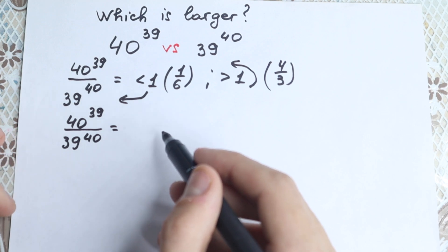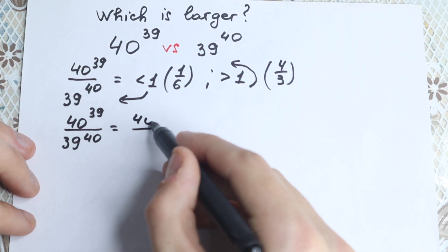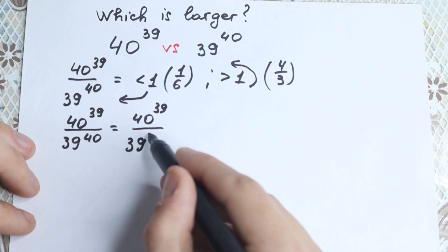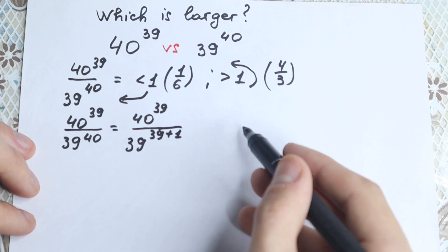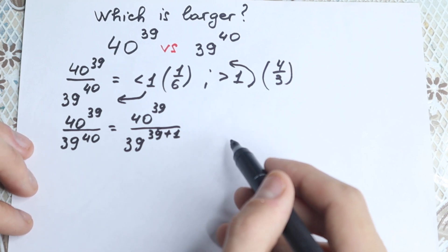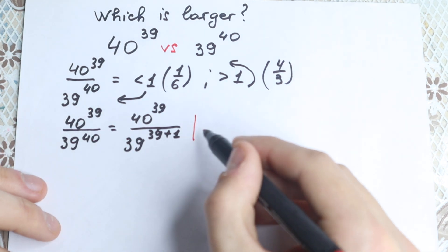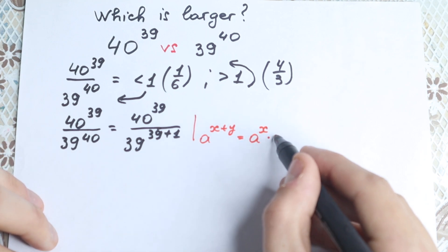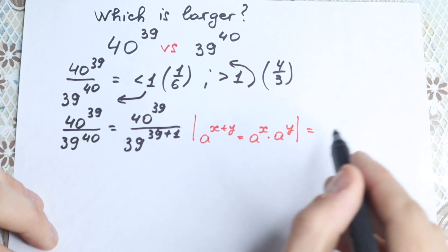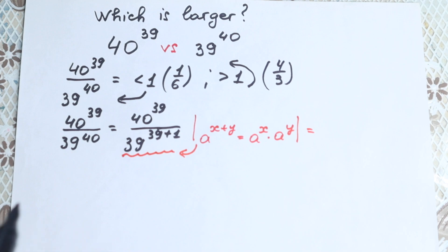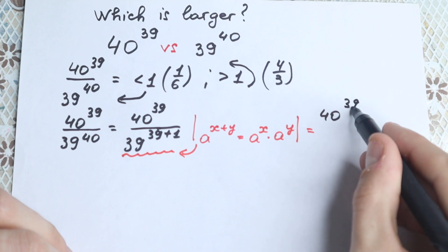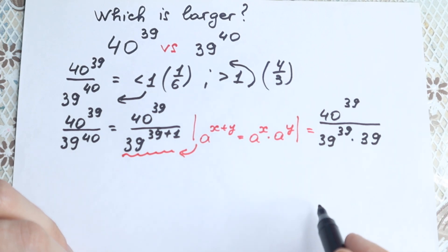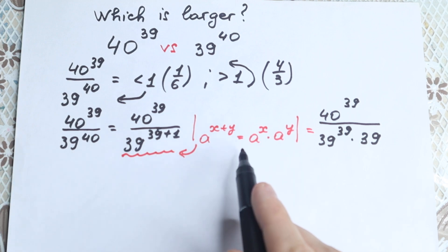First, we can express the denominator using the exponent 39. In our numerator we have 40 to the power 39, and in our denominator we have 39 to the power 40, which we can write as 39 to the power 39 plus 1. Using the power rule — if we have a to the power x plus y, we can write it as a to the power x times a to the power y — we rewrite the denominator as 39 to the power 39 times 39 to the first power, which equals 39.